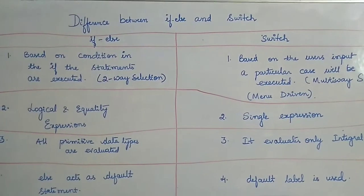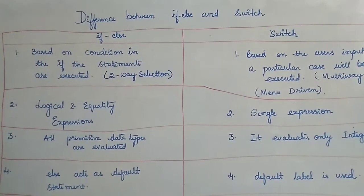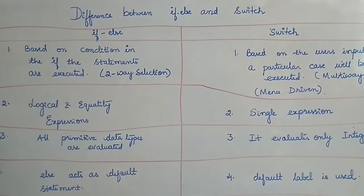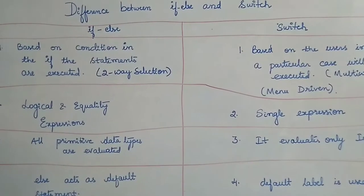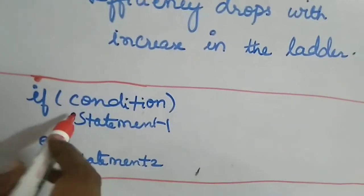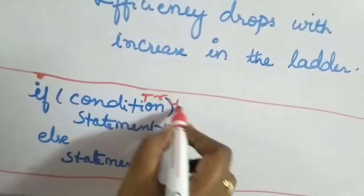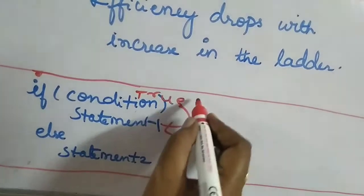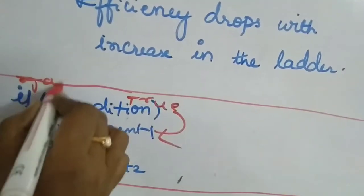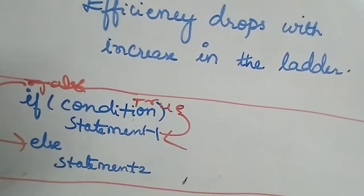Hello friends, welcome back to another session of KoJava tutorials. Today we will see what is the difference between if-else and switch. Let us look into the syntax first. For if, I'll have an if and then a condition. If this condition is evaluated to be true, then statement one is executed. If the condition is evaluated to be false, then else will be executed. So this is the syntax of if and else.